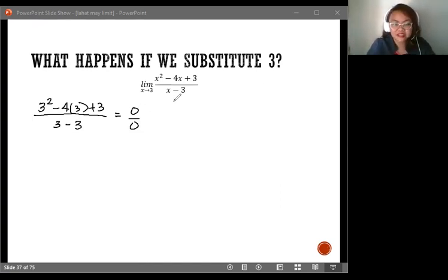When we have these types of limits, these are what we call indeterminate limits. It's different from an undefined function. When you are evaluating a function and you get 0 as the denominator, that's called an undefined function. But when you're evaluating a limit and you got 0 over 0, then this is an indeterminate limit. What is the difference? Let's see.